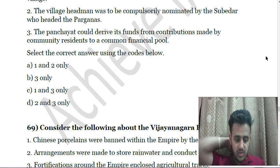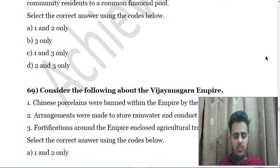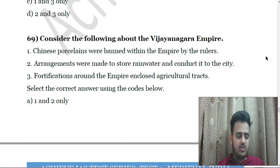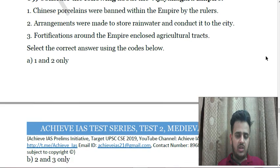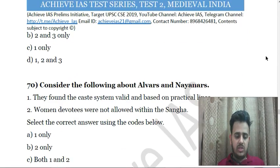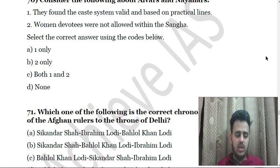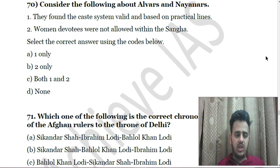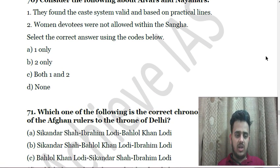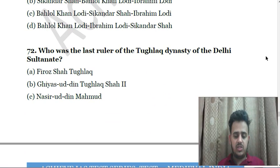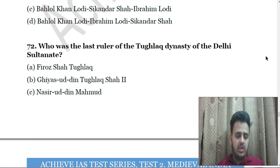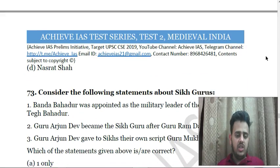Next: Consider the following about rural institutions in medieval India — First, the village panchayats represented only the most dominant caste in the village; Second, the village headman was to be compulsorily nominated by the subedar who headed the parganas; Third, the panchayats could derive their funds from contributions made by community residents to a common financial pool. Next: Consider the following about the Vijayanagara empire — First, Chinese porcelains were banned within the empire by the ruler; Second, arrangements were made to store rainwater and conduct it to the city; Third, the fortifications around the empire enclosed agricultural tracts.